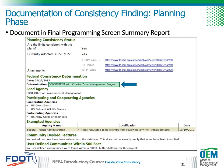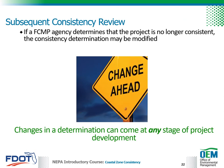During the planning phase, the finding of consistency is included in the Final Programming Screen Summary Report. This report should clearly document that the project is consistent with the Coastal Zone Management Program as well as providing the date that consistency was determined. Changes in a determination can come at any stage of project development. If after review of the advance notification for federal aid projects, a FCMP agency determines that the project is no longer consistent, the consistency determination may be modified. Note that a subsequent consistency review is very rare for FDOT projects and is unlikely to be required.